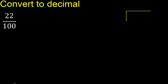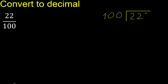22 divided by 100. 22 is less, therefore complete — always complete with 0. Here: 0 point. Is not less.